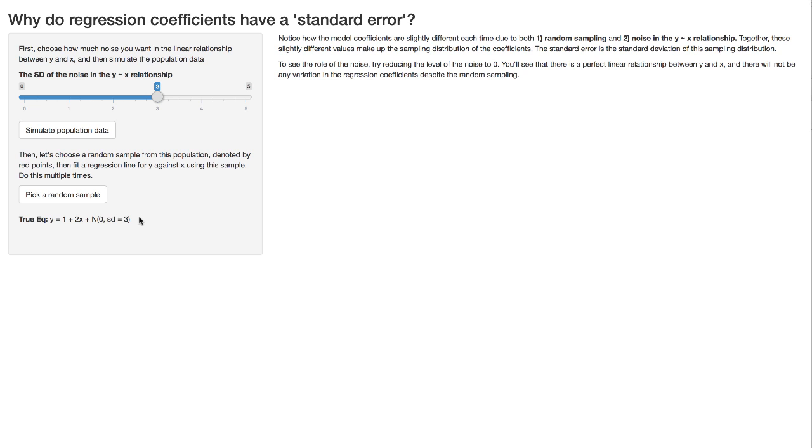So the question is what happens when we take random samples and try to estimate these parameters? So this button here is going to take a random sample from that population and show us what it looks like.